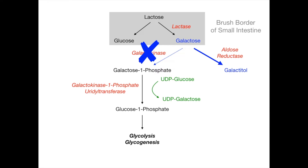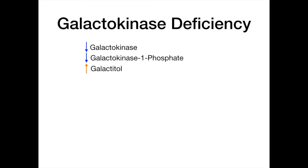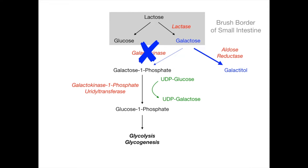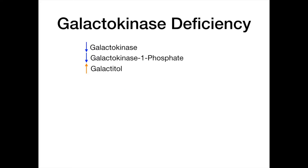This disease is aptly named galactokinase deficiency. You have a decrease of the enzyme galactokinase, a decrease of the product galactose-1-phosphate because you cannot convert the reactant into the product, and instead an increase of galactitol because the pathway gets shunted to convert galactose into galactitol.